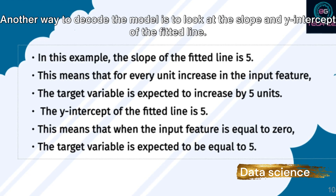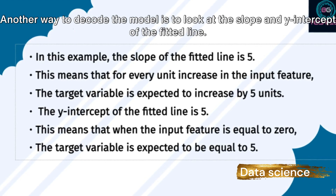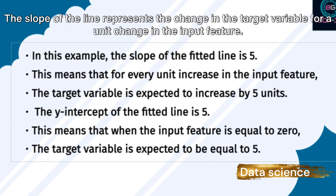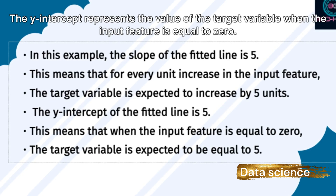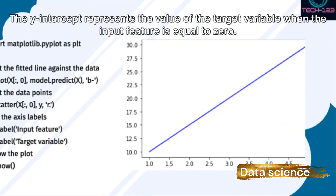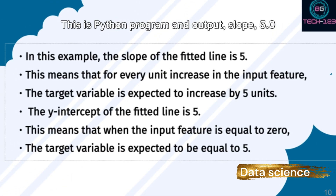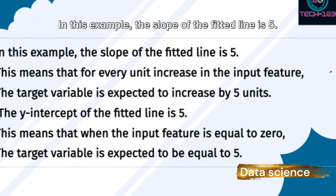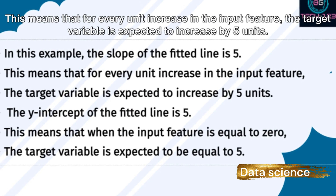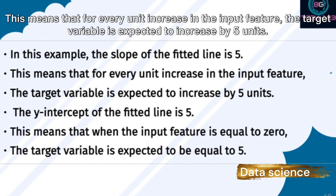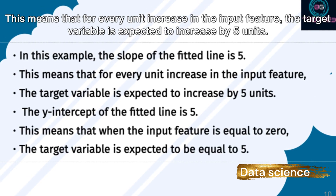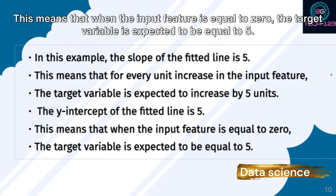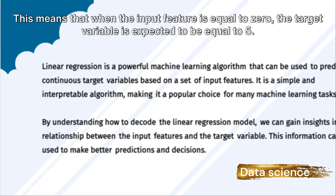Another way to decode the model is to look at the slope and y-intercept of the fitted line. The slope represents how much the target variable changes per unit change in the input feature, and the y-intercept is the target variable's value when the input feature equals zero. In this Python example, the slope is 5.0 and the y-intercept is 5.0. This means that for every unit increase in the input feature, the target variable increases by 5 units, and when the input feature is zero, the target variable equals 5.